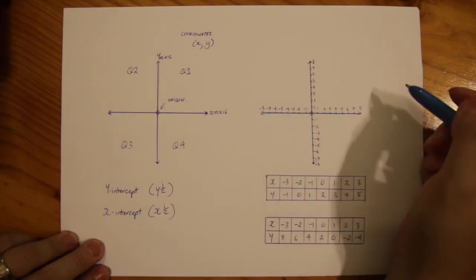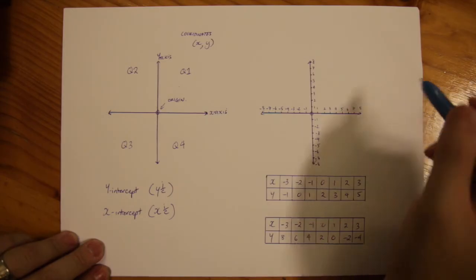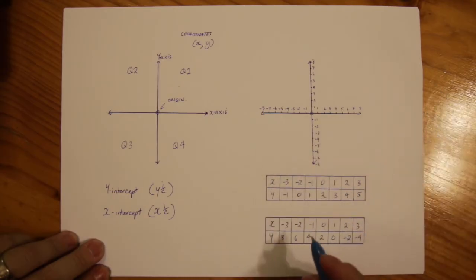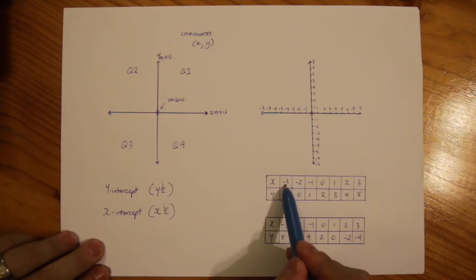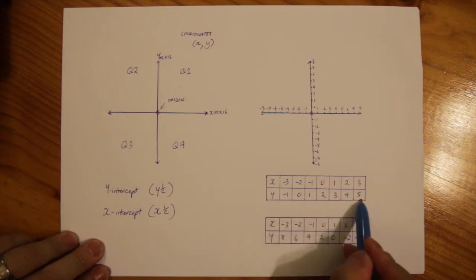Now referring to the right hand side here, we're going to show you some really simple ways of interpreting tables and plotting the points. You'll see here is a table, the first example of a table, x values of negative 3 to 3 and then the range of y values from minus 1 and increasing to 5.